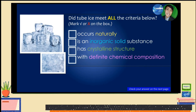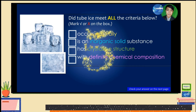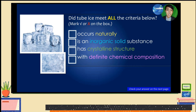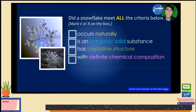Second, did tube ice meet all the criteria? Tube ice is not a mineral — simply, it does not occur naturally. It is not made by nature; it is man-made and artificially made. You knew that. Snowflake is a mineral. But try to give your answer — what criteria are found in snowflake?